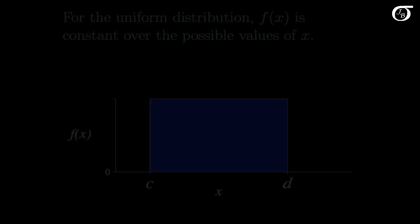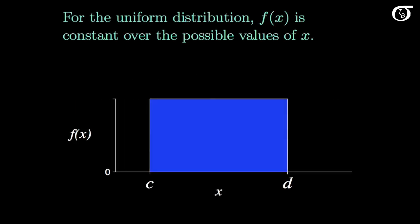Let's look at an introduction to the continuous uniform distribution. There is a discrete version of the uniform distribution, but this video is about the continuous distribution. For the uniform distribution, the probability density function f is constant over the possible values of x.